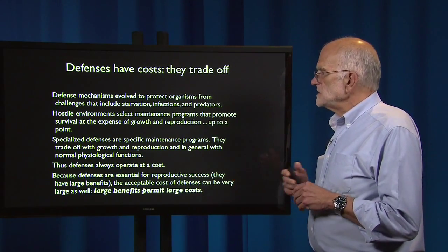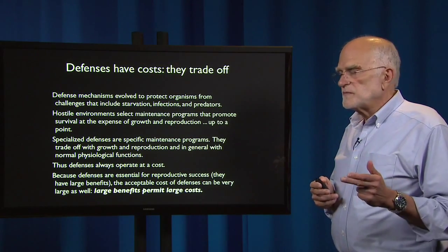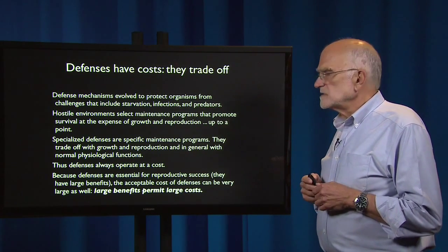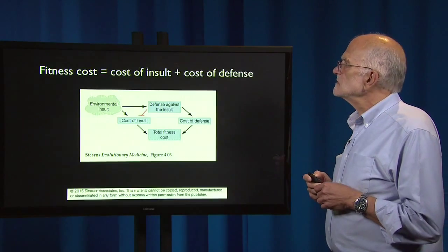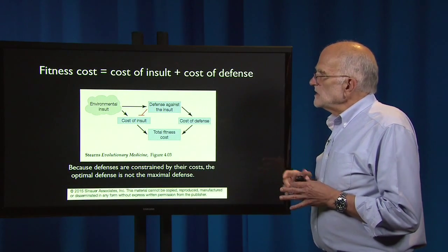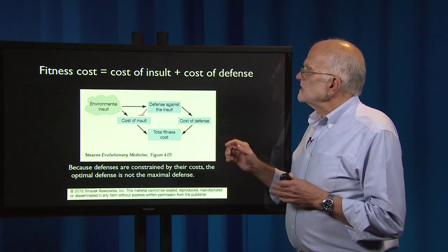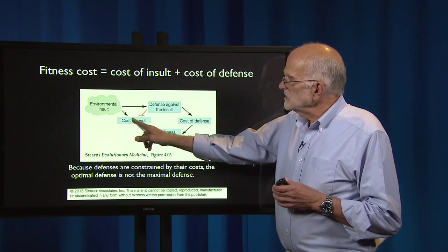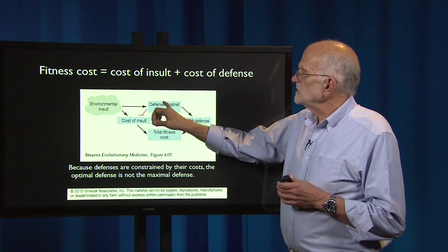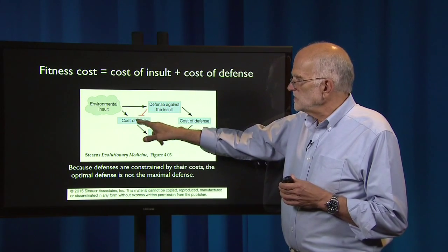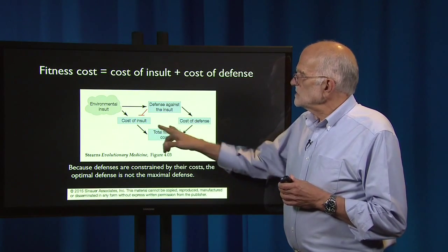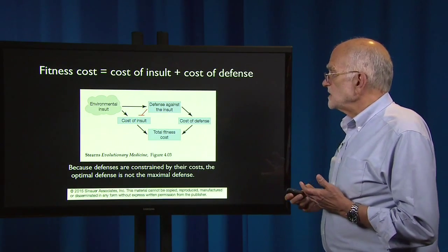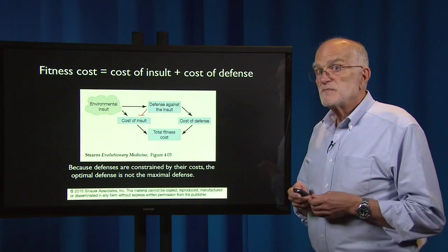Because defense is essential for reproductive success and has large benefits, the acceptable cost of defense can be very large — large benefits permit large costs. If we diagram these ideas, the fitness cost of defense is the cost of the insult plus the cost of the defense. The environmental insult causes a cost; defense ramps up against the insult to reduce that cost, but it has its own cost, producing a total fitness cost. Because defenses are constrained by their costs, the optimal defense is not the maximal defense.